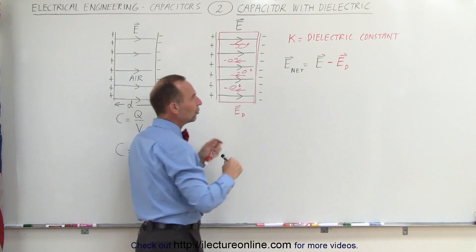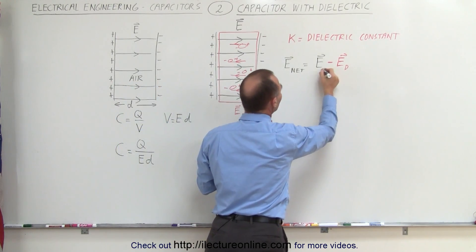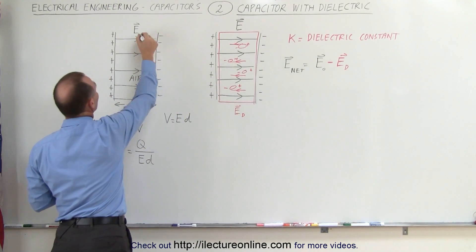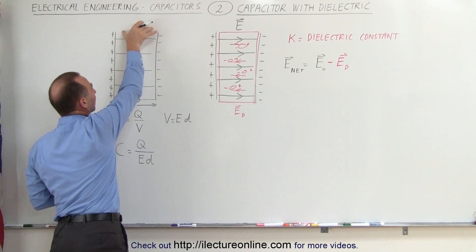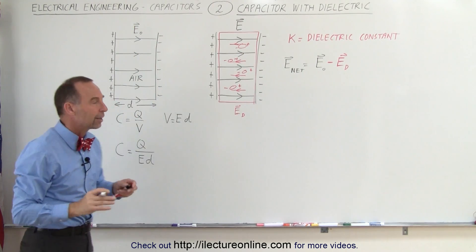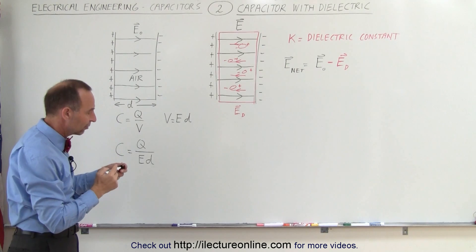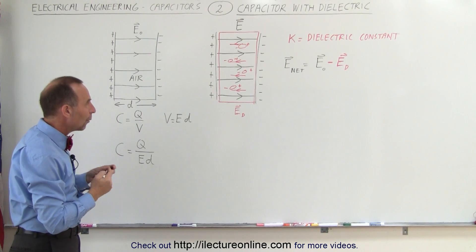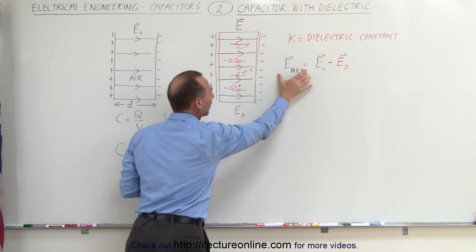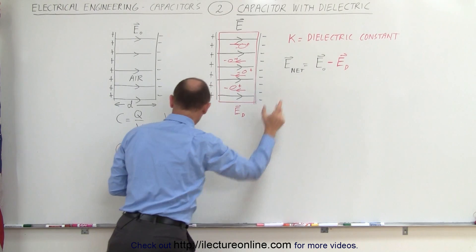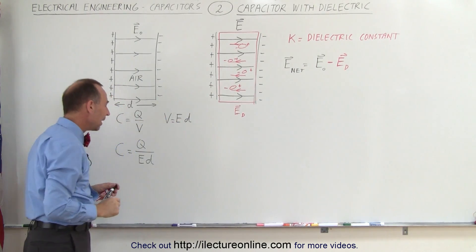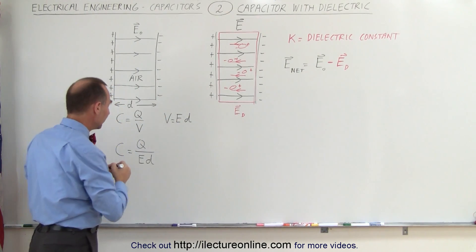I'm also going to call the original field E sub not, because this denotes the electric field strength in a capacitor where there's only air between the plates. Now if I use this new net electric field strength inside my capacitor, notice what's going to happen.